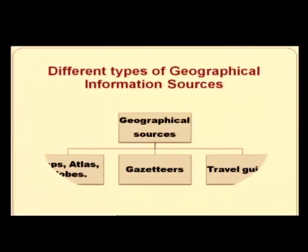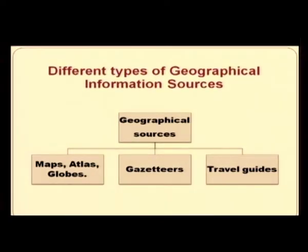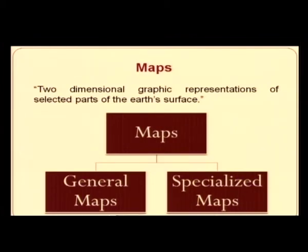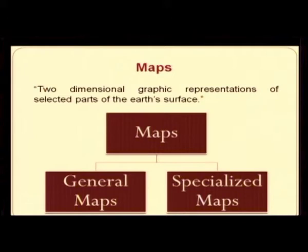There are different types of geographical information sources, divided into three categories: maps, atlases and globes; gazetteers; and travel guides. When we talk about maps, a map is a two-dimensional graphic representation of selected parts of the Earth's surface. Maps are divided into two major categories: general maps and specialized maps.